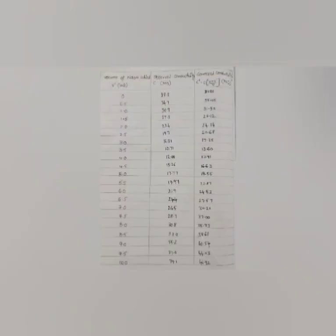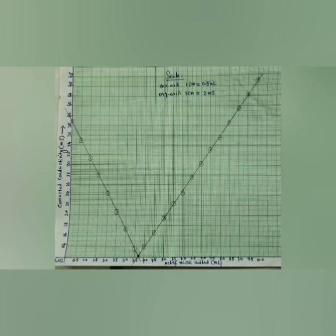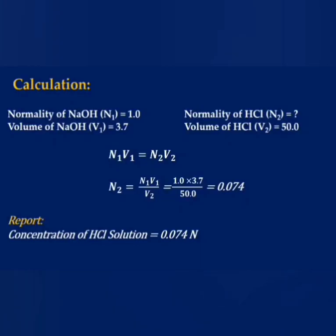These are the conductance and corrected conductance values. This is a graph between corrected conductance values and volume of NaOH added. First, there is a decrease in conductance values. After reaching the end point, there is an increase in conductance values. The end point is at 3.7 ml.